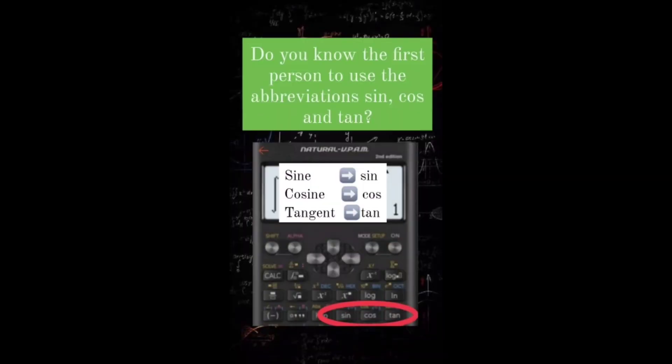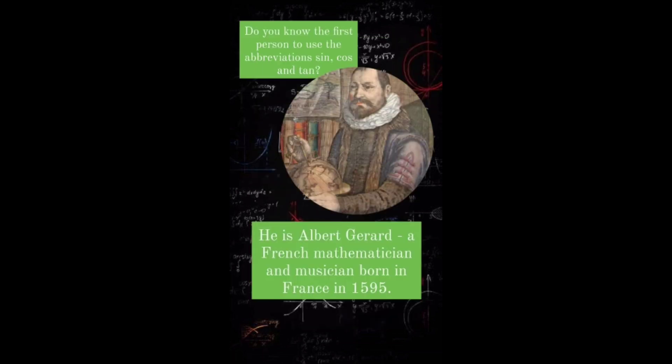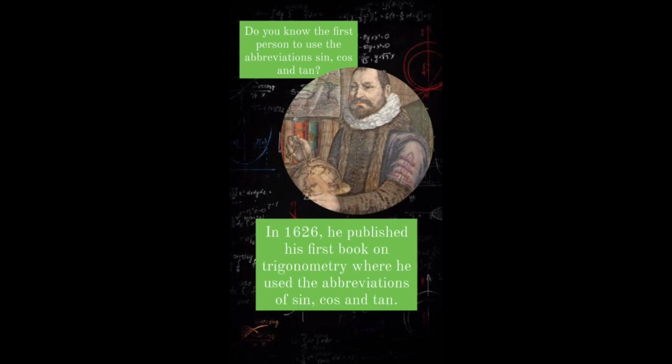Do you know the first person to use the abbreviation sin, cos, and tan? He is Albert Gerard, a French mathematician and musician born in France in 1595. In 1626, he published his first book on trigonometry, where he used the abbreviations of sin, cos, and tan.